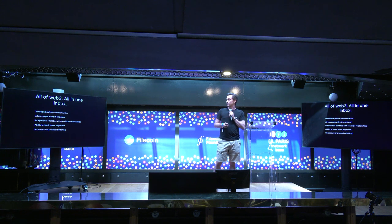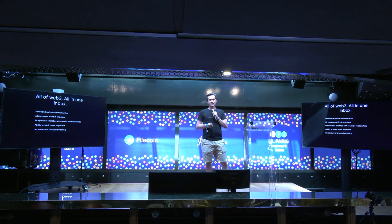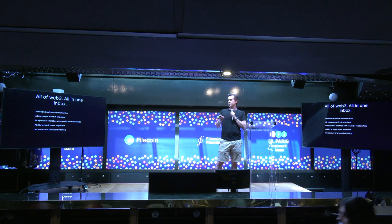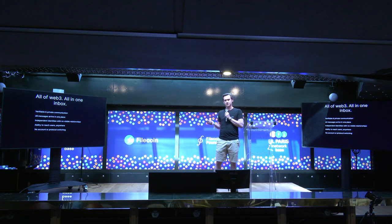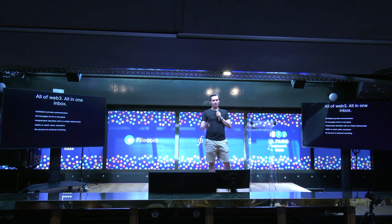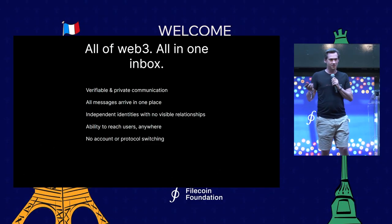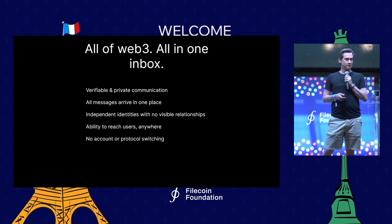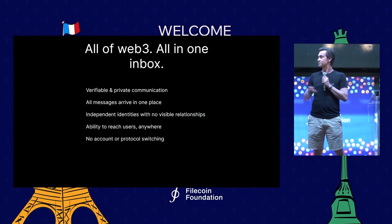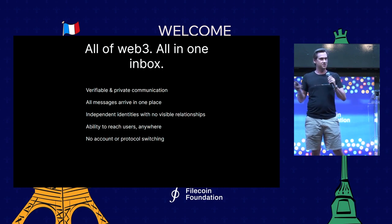The way we've approached the addressing side of things, you can basically reach any different user on any of our supported protocols. For example, you could send from a FEVM address to a Tezos address to a NEAR address back to an Ethereum address, and all of that works. You don't need to switch accounts and protocols — regardless of what layer you're functioning at with EVMs, you just stay in MailChain.